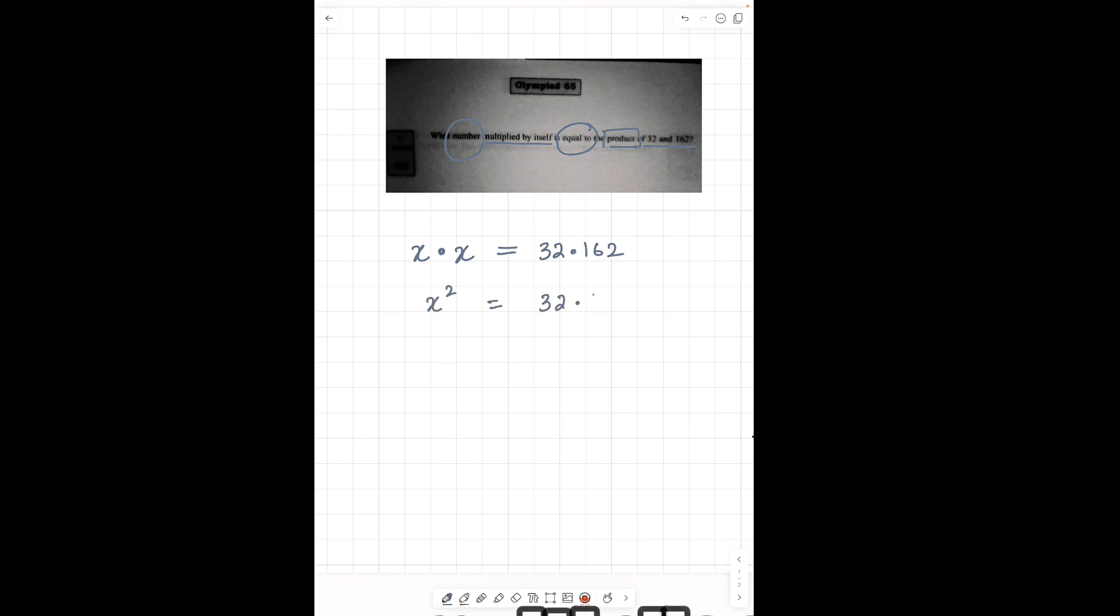When x multiplies by itself, it becomes x squared. Now at this point, you don't have to multiply 32 and 162. We will just go ahead and find the square root of both sides. Remember to put a plus minus sign. x equals plus minus square root of 32 times 162.